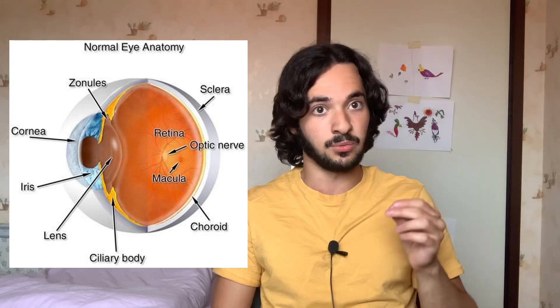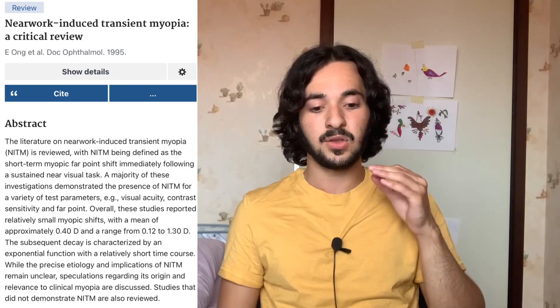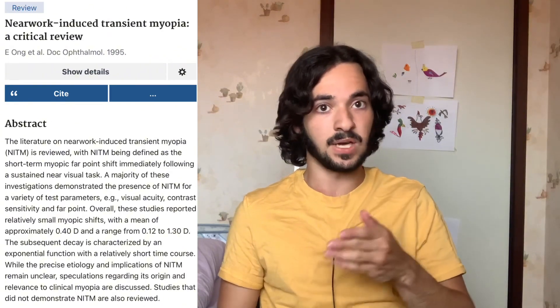What do we do in modern society with our computers, books, and phones? We look closely. The problem is that when you contract the ciliary muscle over a long period of time — say three hours or more — you get near-induced transient myopia. Near-induced means it's caused by looking at things that are near. Transient myopia means temporary short-sightedness. So when you look at something closely for a long period of time, your vision gets blurry — and you've probably experienced this.